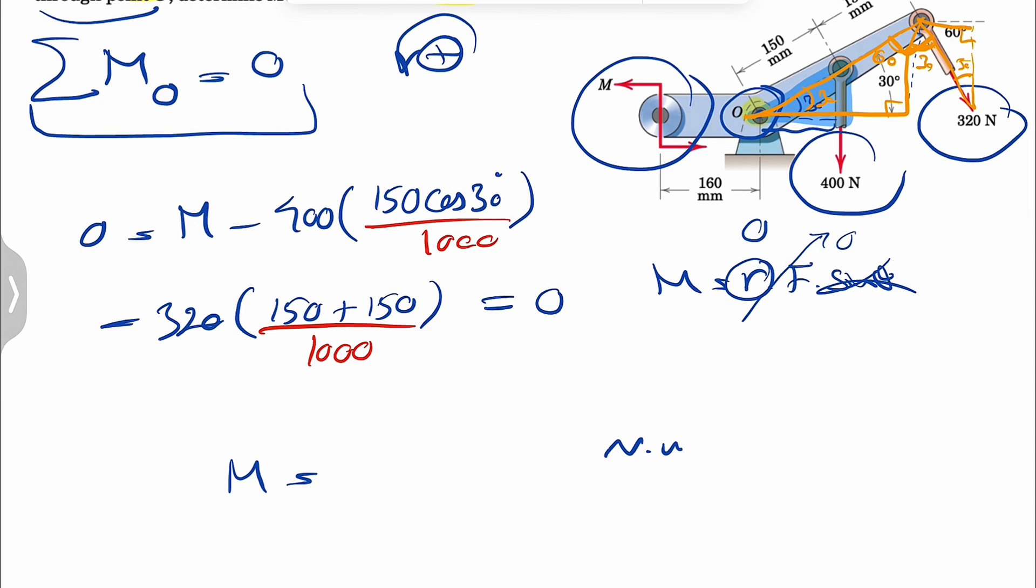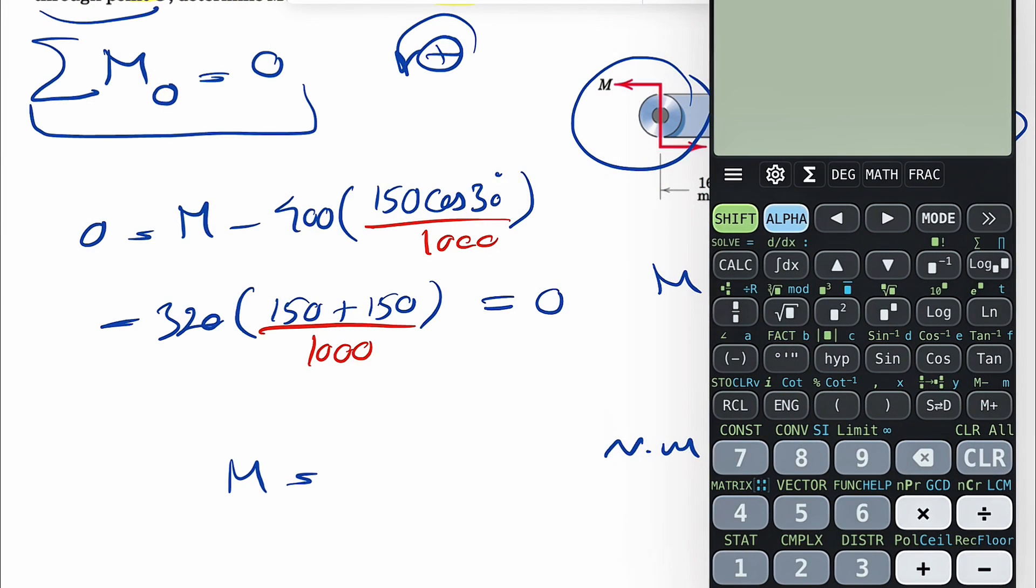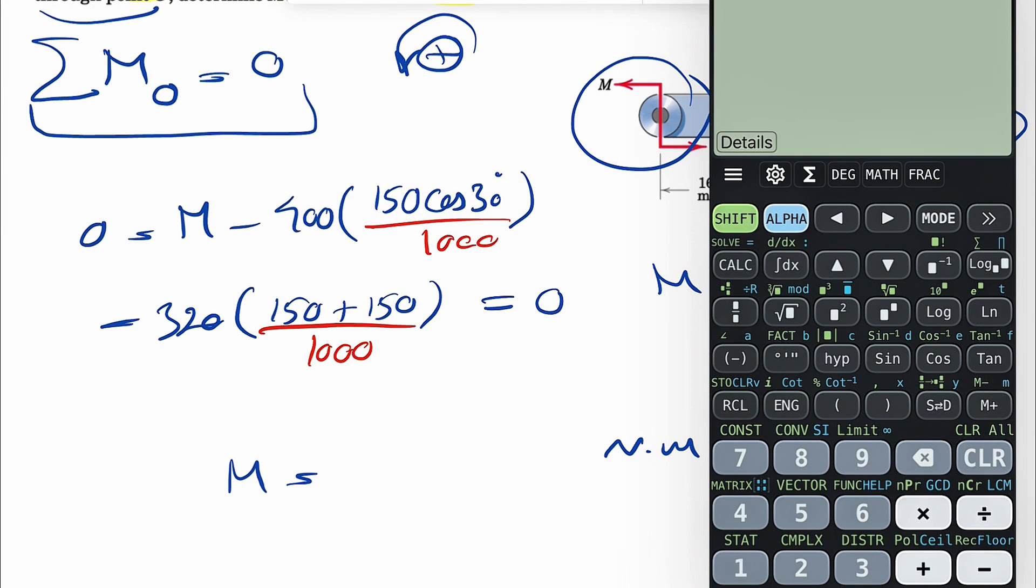So basically, it will be, let's just calculate this. So 400 times 0.15 cosine of 30 plus 320 times 0.3. That's going to give us 147.96.